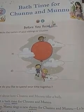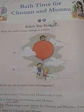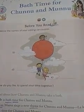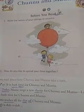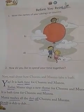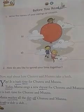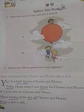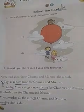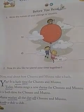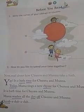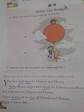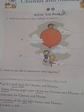Good morning children. Welcome back. Children, do you remember we were reading lesson 2, 'Bath time for Chunnu and Munnu'? In this story, what we have read so far is that Chunnu and Munnu were going for a bath with their mama, and mama sang a new rhyme for them, and also mama washes all the dirt of Chunnu and Munnu. Now let's continue our story.